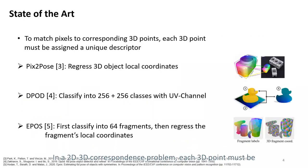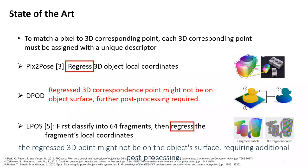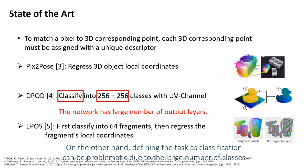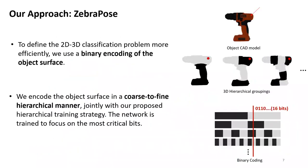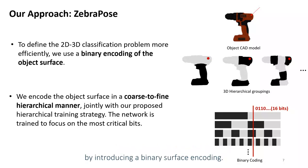In a 2D-3D correspondence problem, each 3D point must be assigned a unique descriptor. Recent approaches solved this in different ways. However, when defining the task as a regression problem, the regressed 3D point might not be on the object's surface, requiring additional post-processing. On the other hand, defining the task as classification can be problematic due to the large number of classes. In Zebra Pose, we define the 2D-3D matching as a classification problem more efficiently by introducing a binary surface encoding.